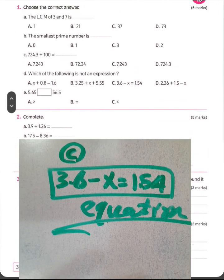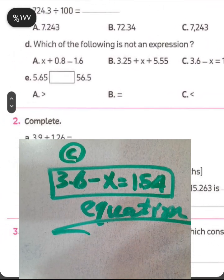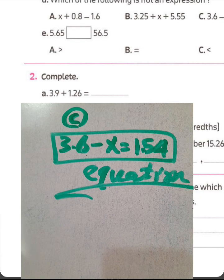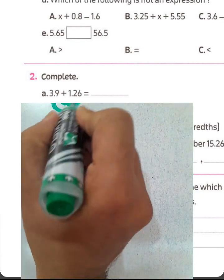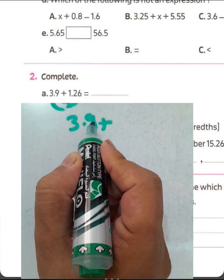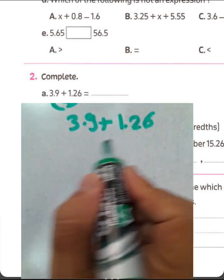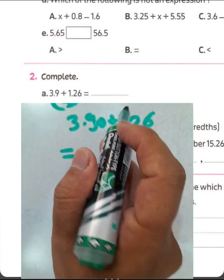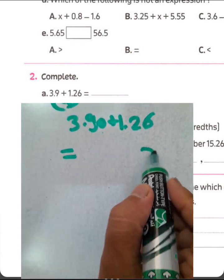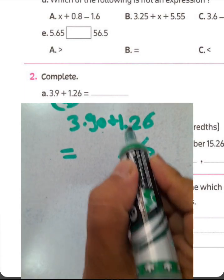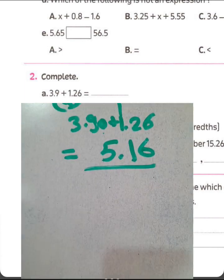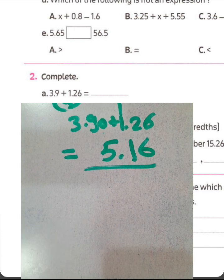Question number 2, complete. Letter A, 3.9 plus 1.26 will be equal to what? We can add them. We write zero here behind this number. 6 plus 0 equals 6. 2 plus 9 equals 11, 1 and the carry of 1. 1 plus 1 equals 2. 2 plus 3 equals 5. The result will be 5.16.